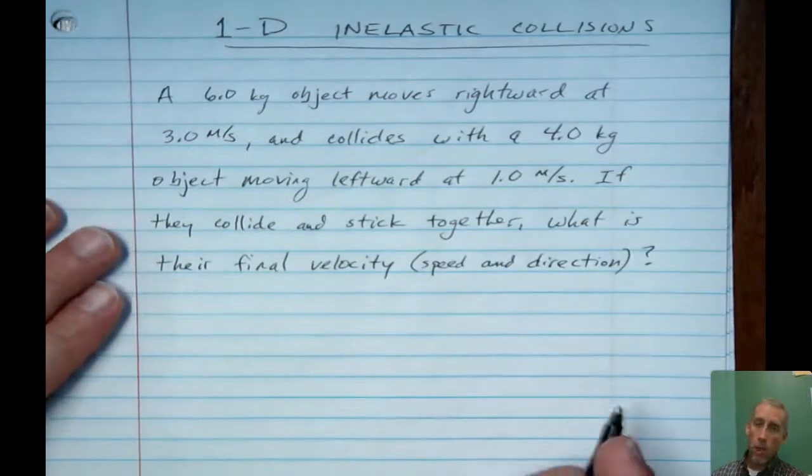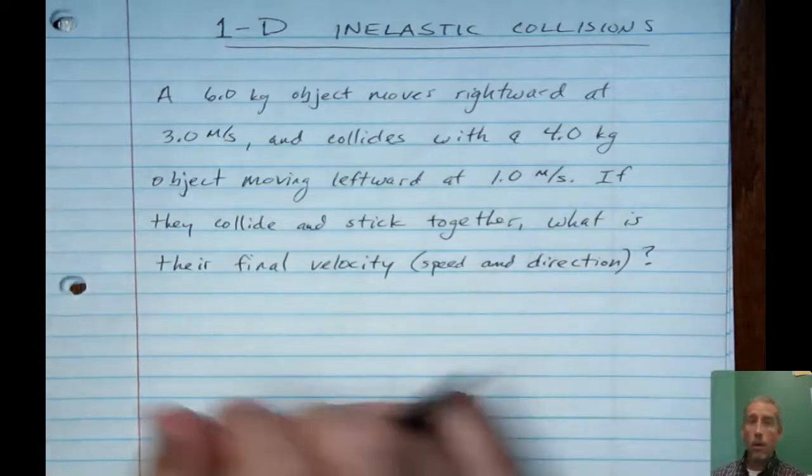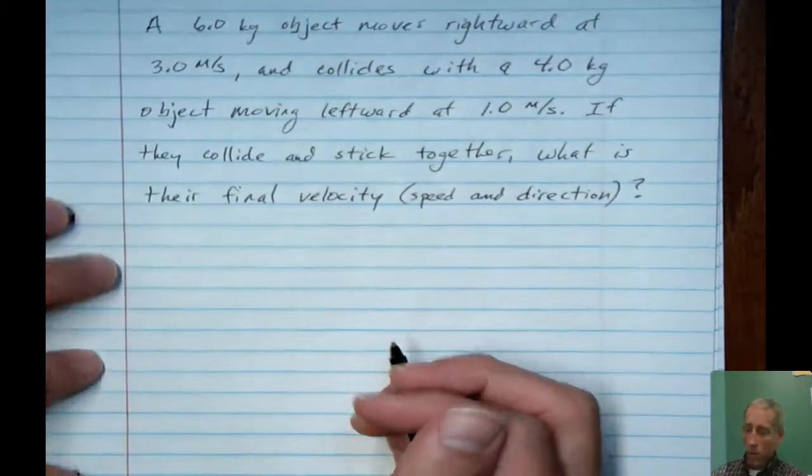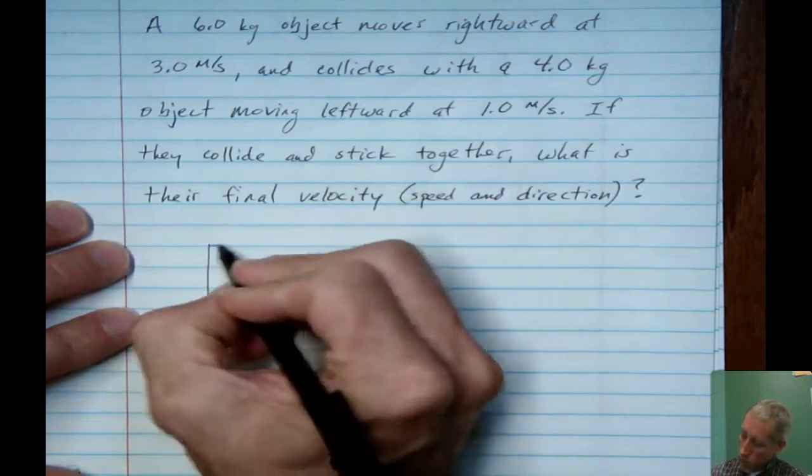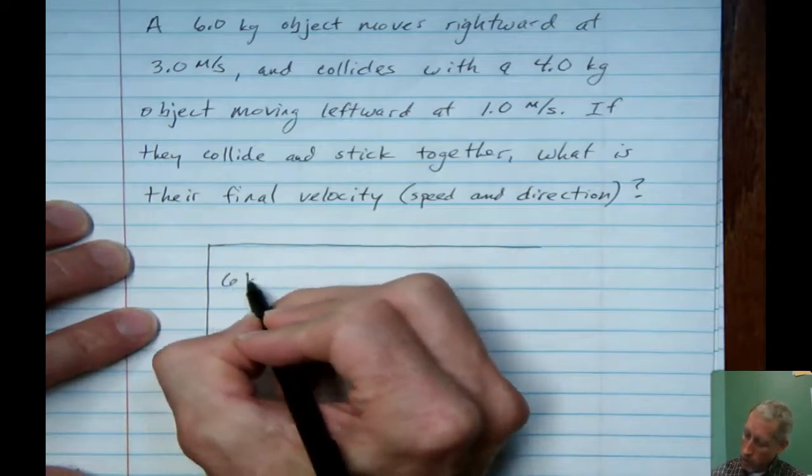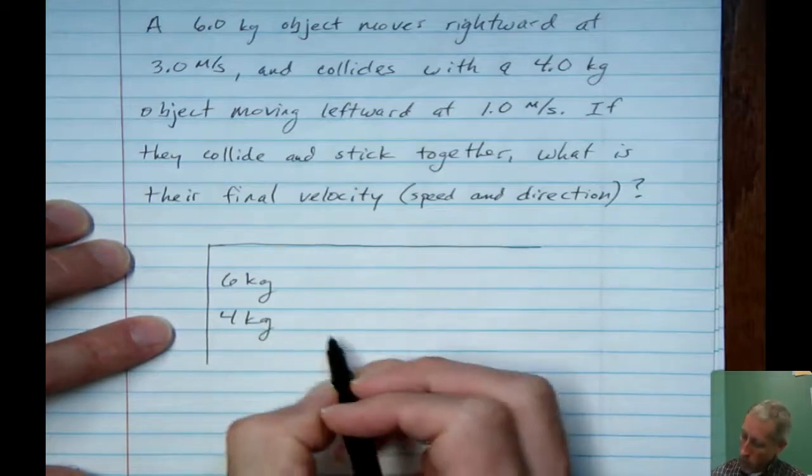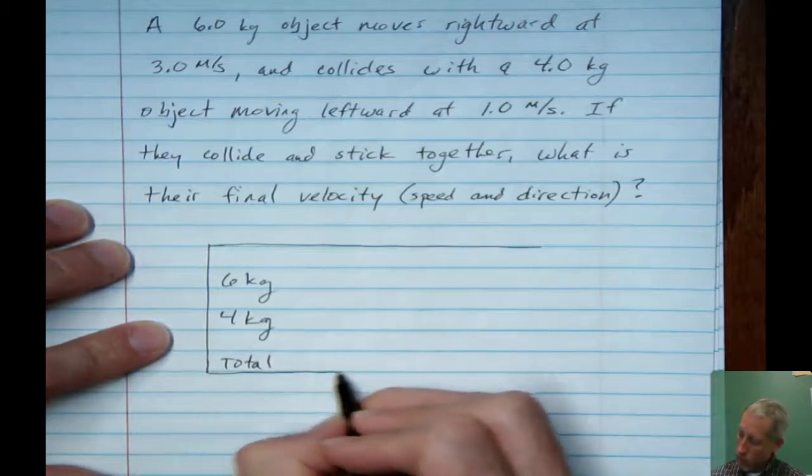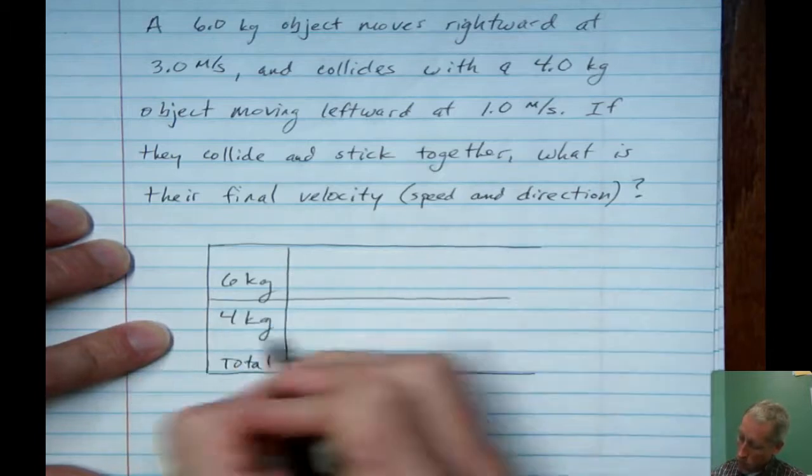When you set up a momentum table, in this situation, we have two objects. And so, each object is going to have its own line on the momentum table. Make sure you can see all of this. So, in the momentum table, we're going to have a line for the six kilogram object, and another line for the four kilogram object. And then there'll be a line down here for the total of the system. That's the two objects combined.